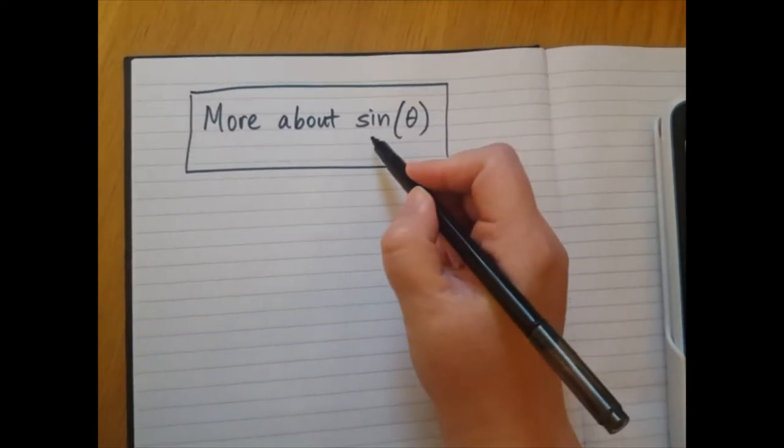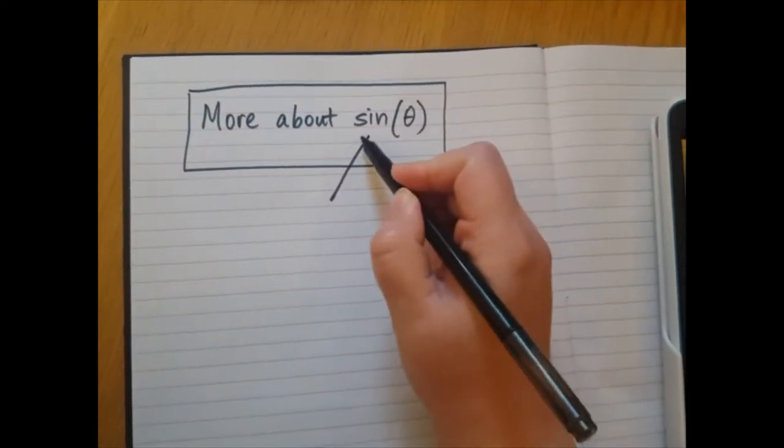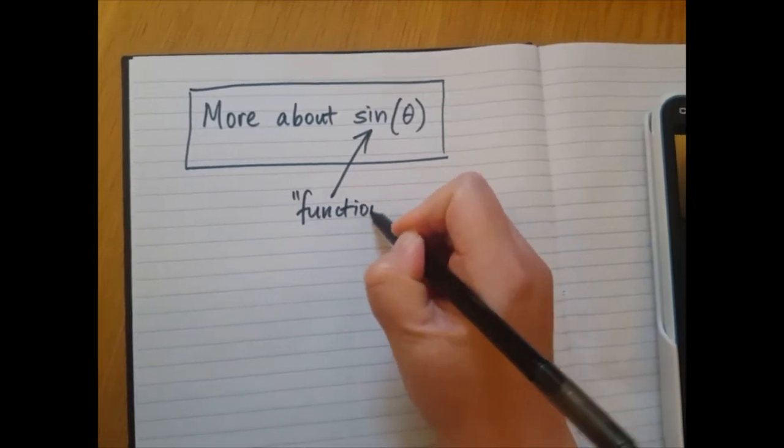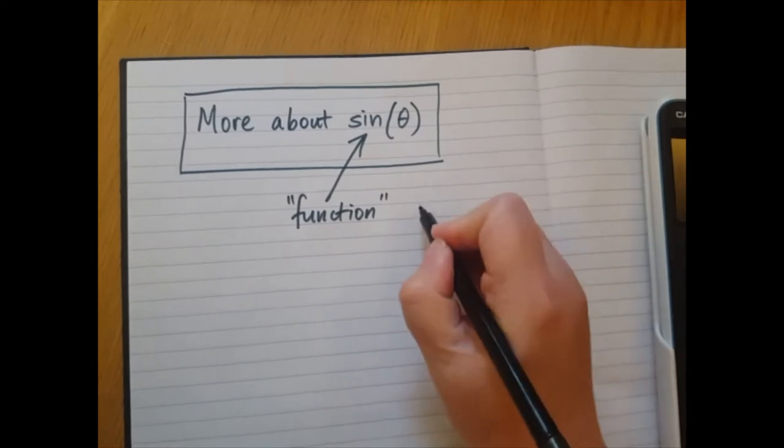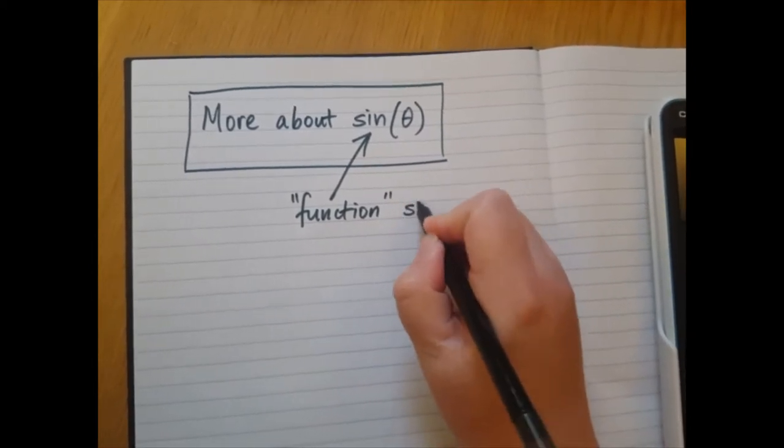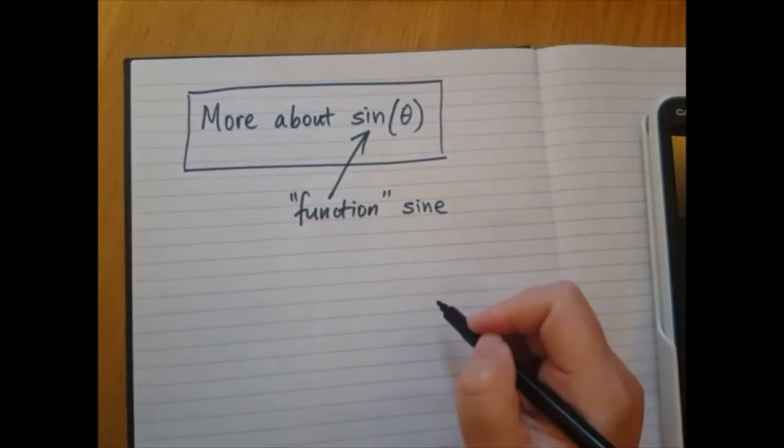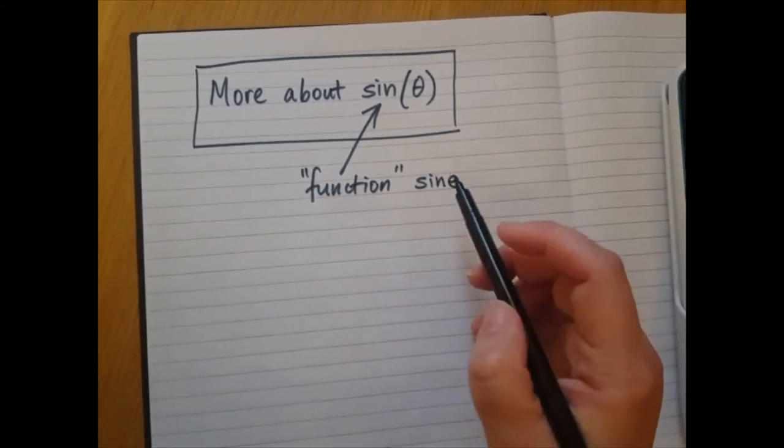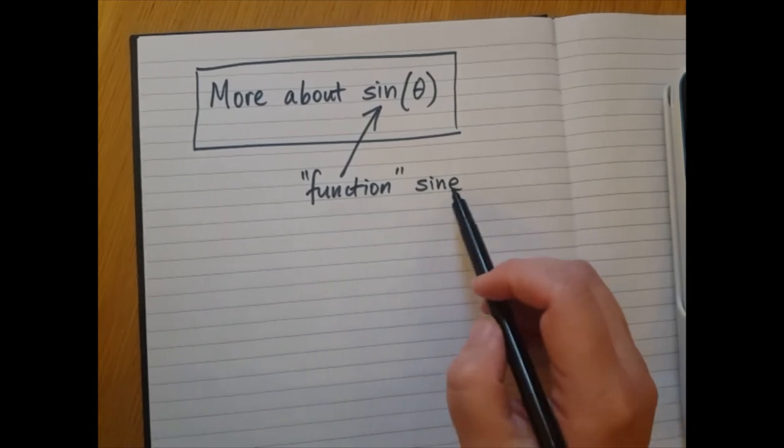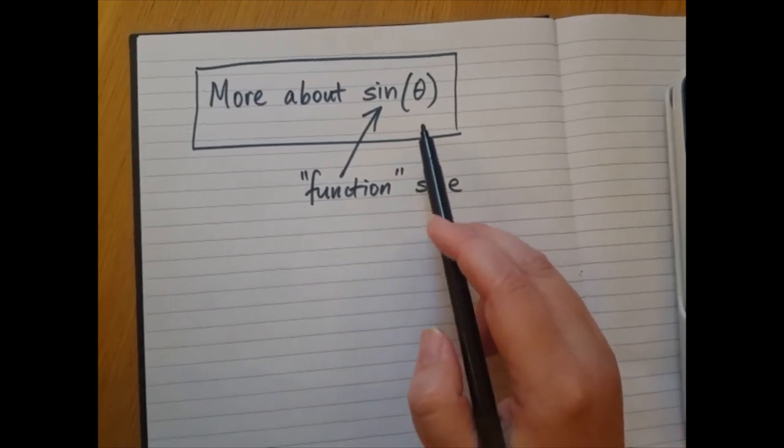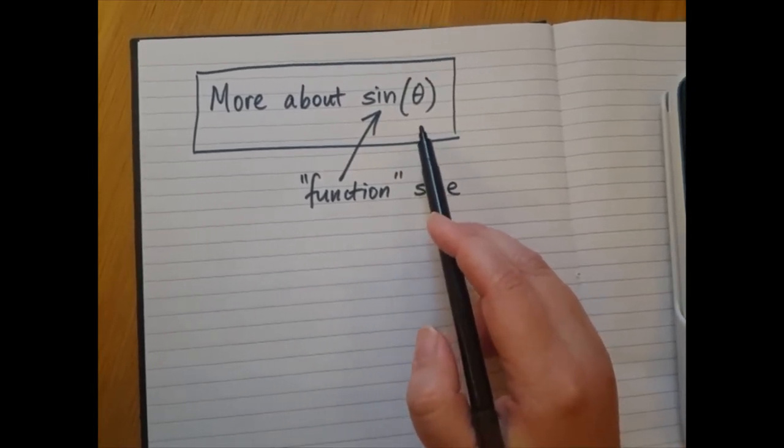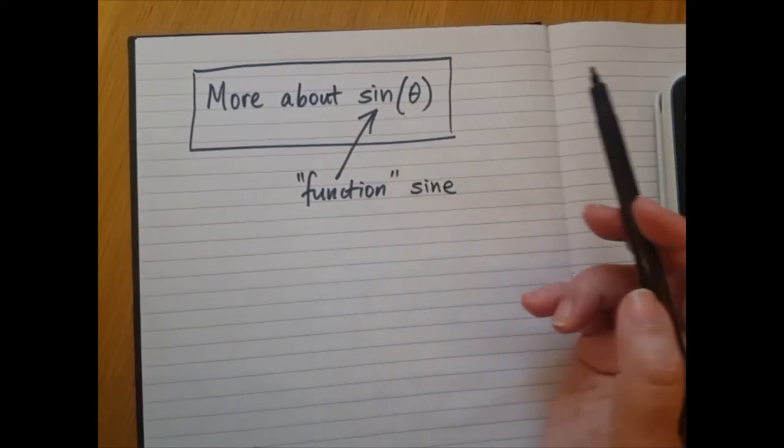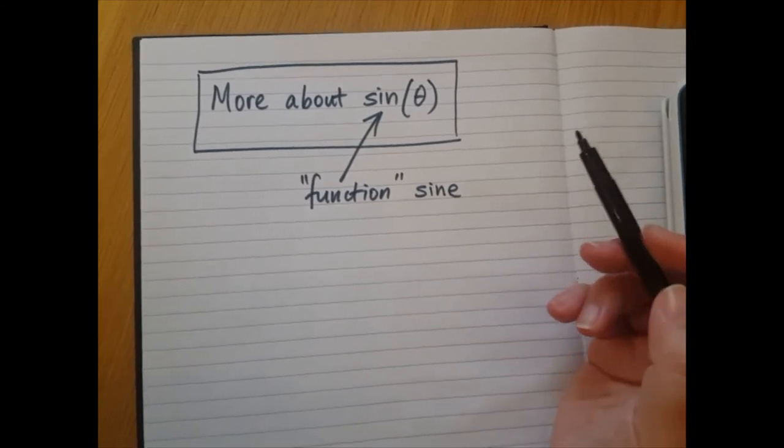So this part where it says sin, that's a function. So the name of the function is actually sine, but we abbreviate it to be three letters, S-I-N. And what that means is that every time you put an angle into this function, the sine function, it will give you an answer which is a decimal number.